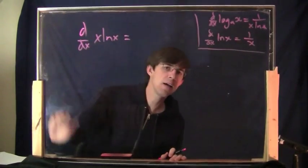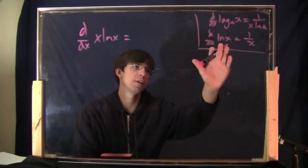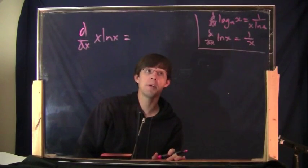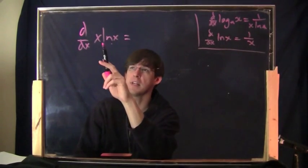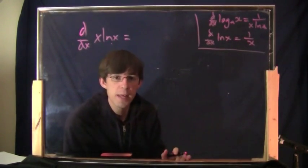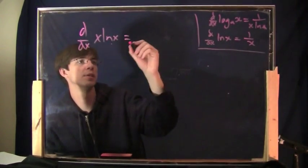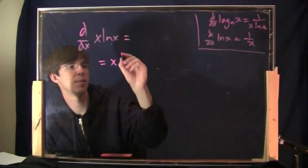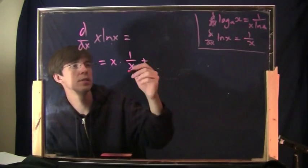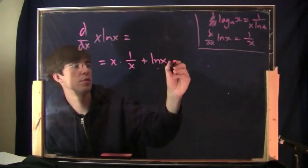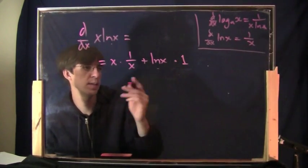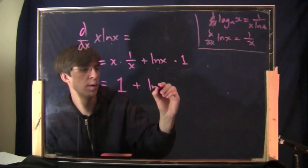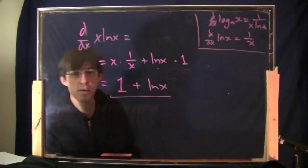How about the derivative of x times natural log of x? The ln of x uses that formula, but I'm multiplying by x on the front. That complicates things because I now have two functions multiplied together — one being x, one being ln of x. What do you do in that case? You do the product rule. So it is: the first thing, x, times the derivative of the second part, which is 1 over x, plus the second part, ln of x, times the derivative of the first part, which is 1. x times 1 over x is 1, so the answer is 1 plus ln of x.